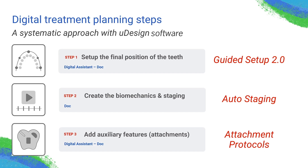Step one — you can do it yourself, you can pass it to your digital assistant, you can train them and get it done. Step two is the biomechanics and staging. I highly recommend for the orthodontist to learn how to do that. We'll automate some of these stages, but I still believe that the power of UDesign is actually in this step. Then the third step, after you finalize the biomechanics, is to add your auxiliaries, which are your attachments. That step could also be done by you or your team.